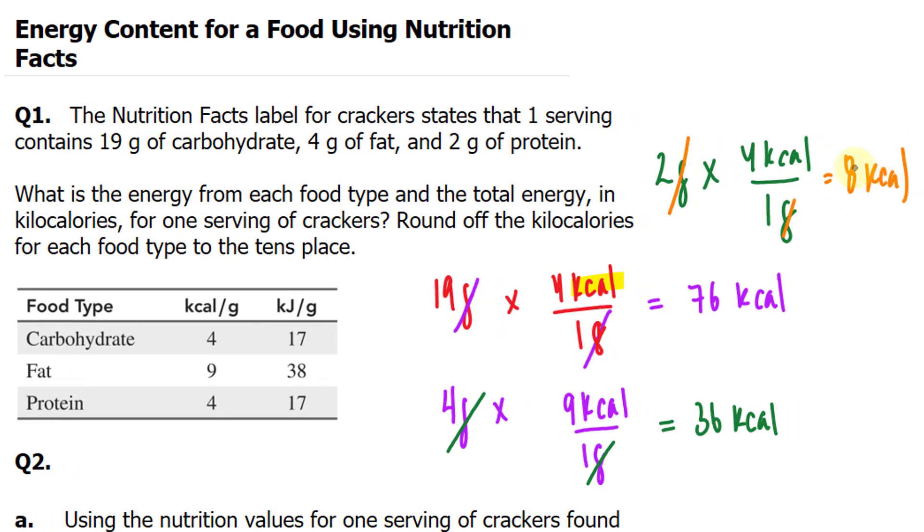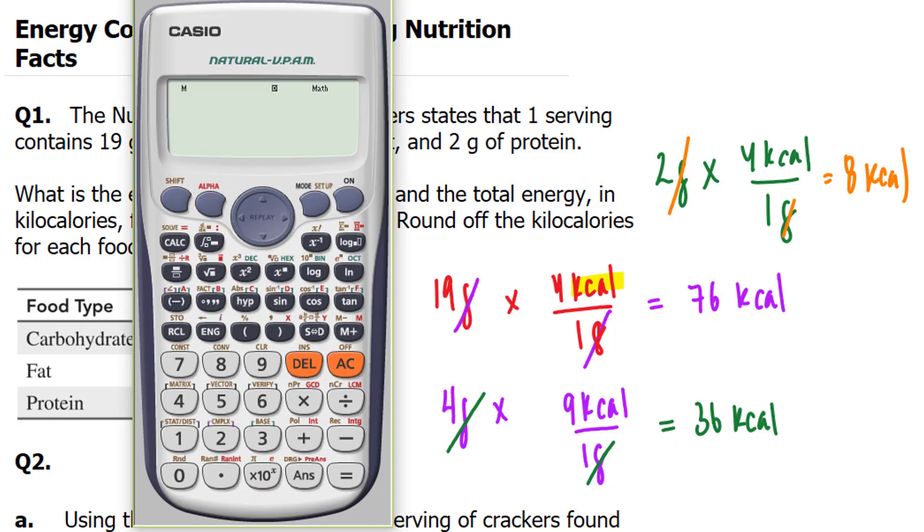And from here, we'll be adding up this number in orange, this number in purple, and this number in green. Let's use our calculator. 8 plus 76 plus 36 and we end up with 120 kilocalories per serving.